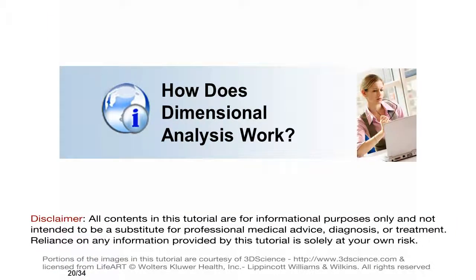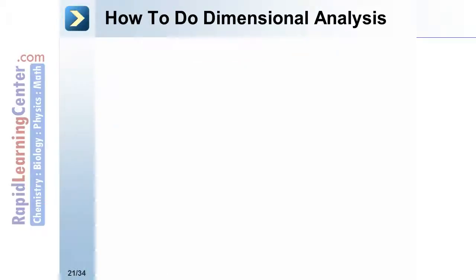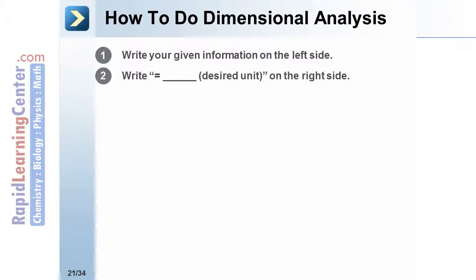How does dimensional analysis work? The five steps are shown for dimensional analysis. Step 1: Identify your given information. Step 2: Identify the desired unit.